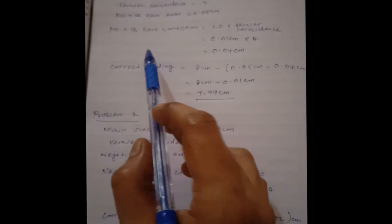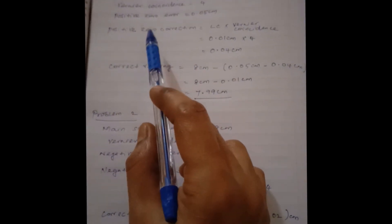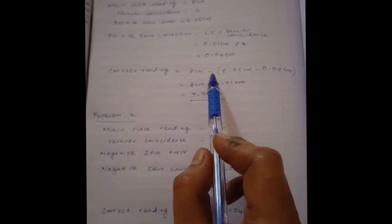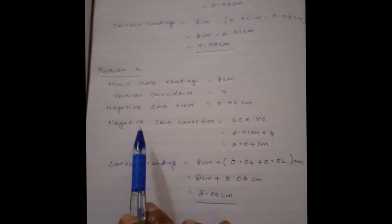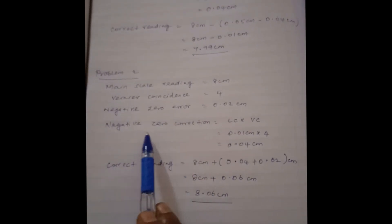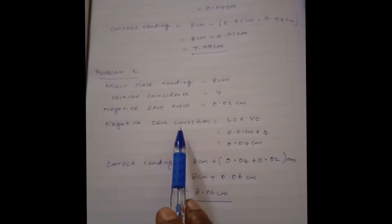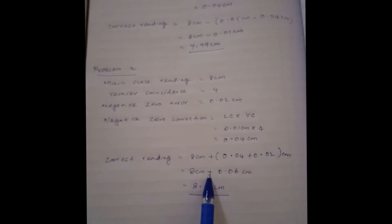The main thing is: if it is a positive zero error, you will subtract it from the main scale reading. If it is a negative zero error, you calculate the negative zero correction and add it to the main scale reading. This is the concept you need to understand in these problems.